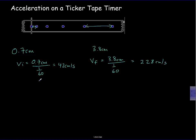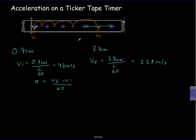Now we have initial and final velocities, but we still need the time interval. V_initial is really an average speed taken at the midpoint between the first pair of dots, and V_final is the average for the last pair. Counting the intervals between these midpoints: one, two, three, four intervals — each worth 1/60th of a second. So delta t = 4 × (1/60) = 0.0667 seconds.